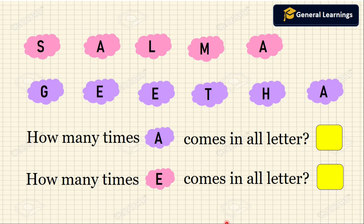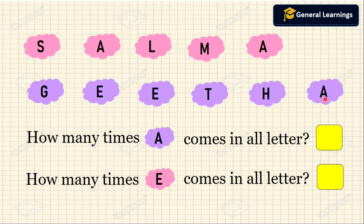Now they have given some of the letters of the words and we are going to answer these questions. How many times does A come in all the letters? In this word A occurs 1, 2 times, and in this word A occurs 1 time — so 1, 2, 3. A occurs 3 times.